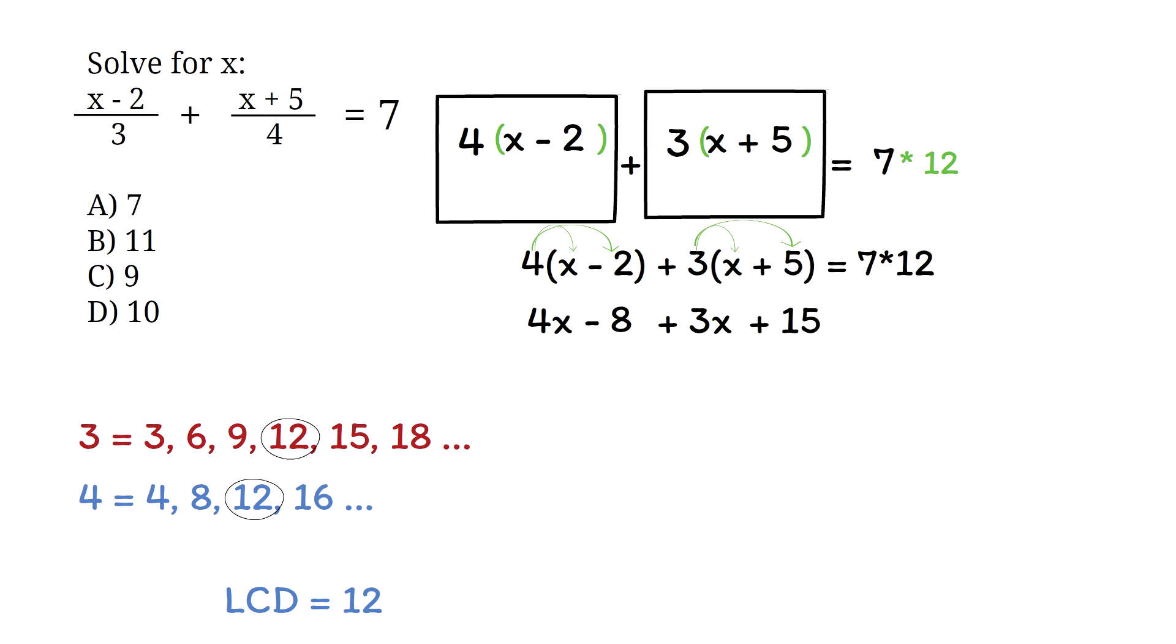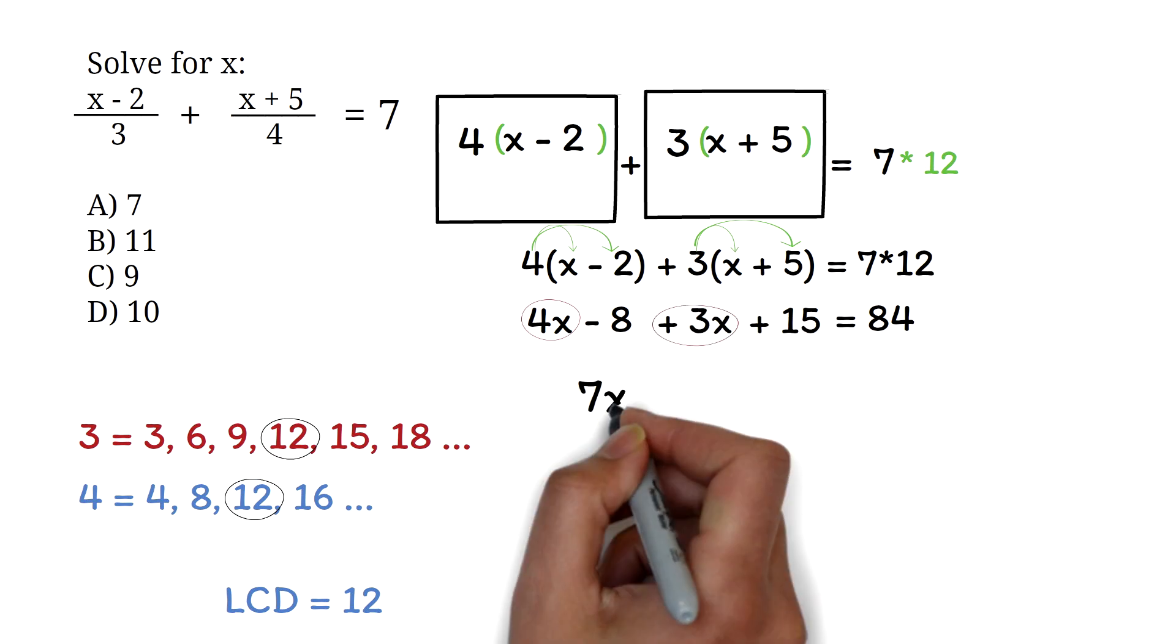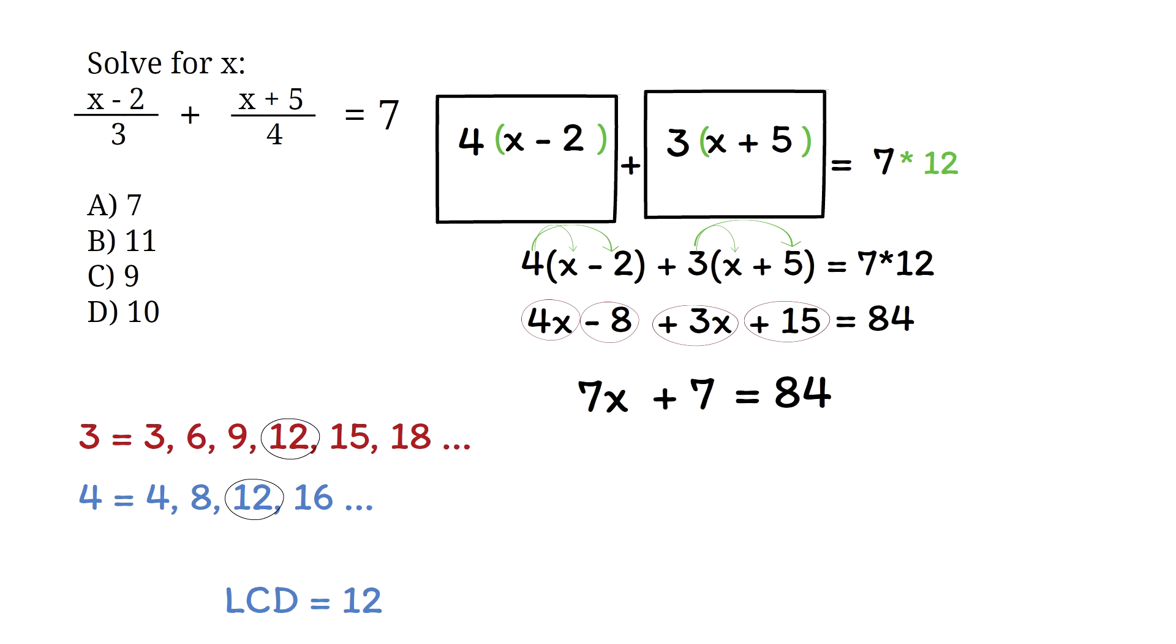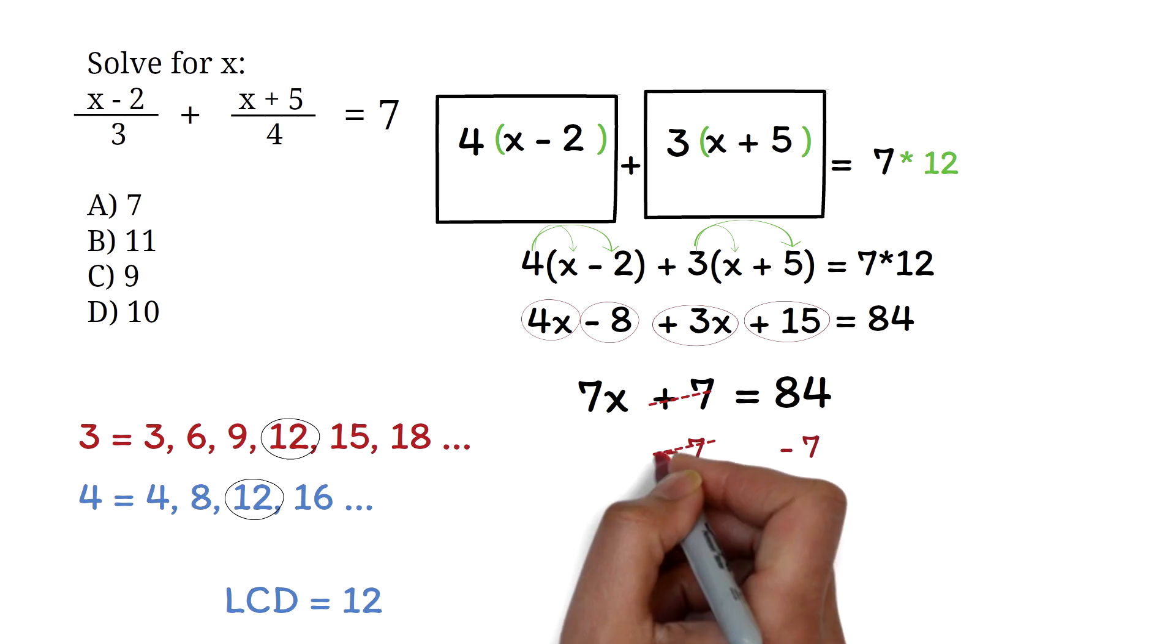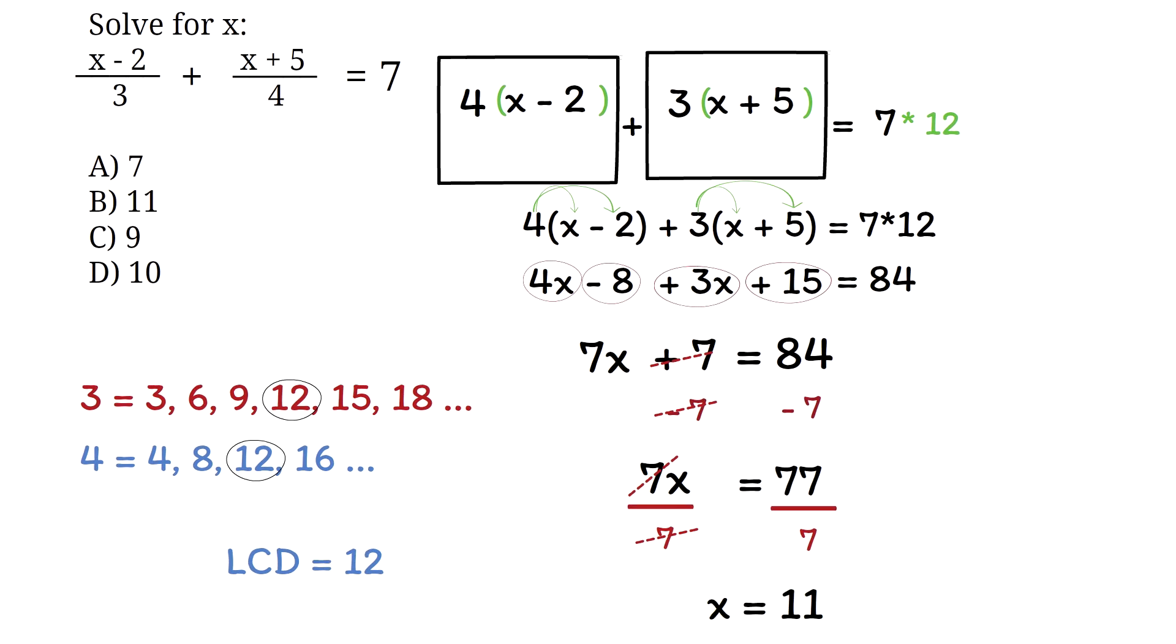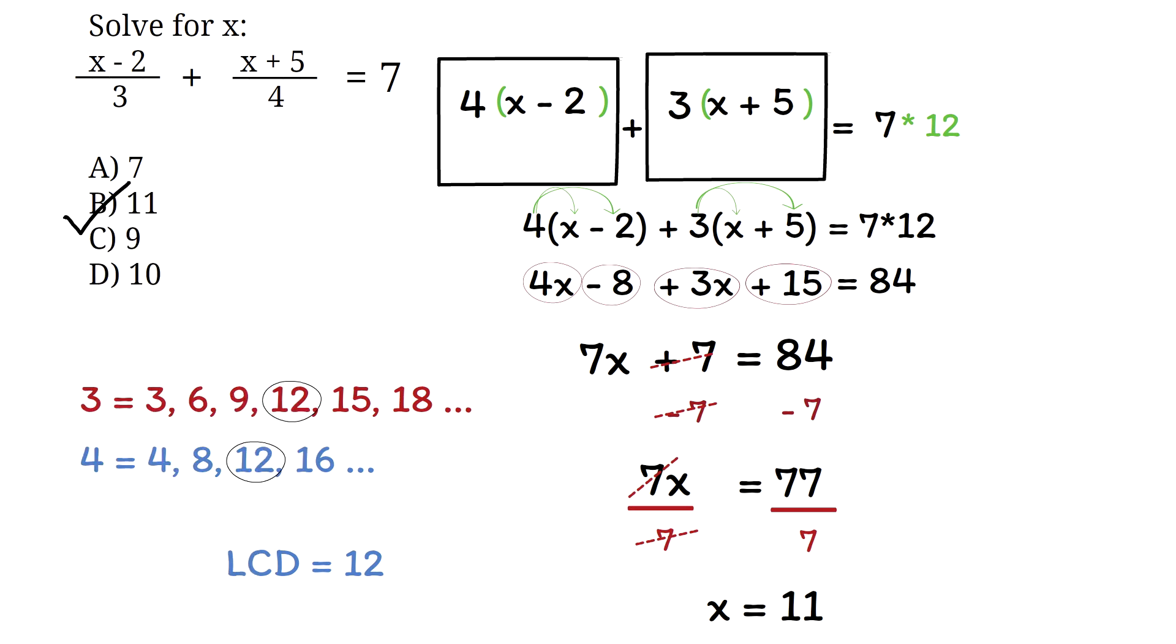Next, let's simplify by adding like terms. We can add the 4x and 3x to get 7x. Also, negative 8 plus 15 will be 7. We now have a simple two-step equation. To find x, we will first subtract 7 from both sides. The 7 will cancel out. 84 minus 7 is 77. Next, we will divide both sides by 7. The 7 will cancel out. 77 divided by 7 is 11. So, x equals 11. The correct answer is therefore option B, 11.